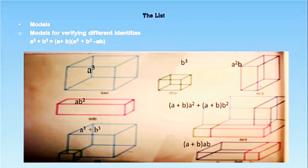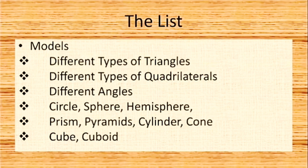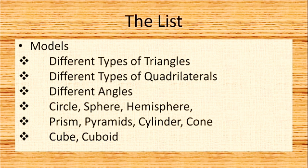Similarly, we can solve the identity a³ + b³. We can have models of different types of triangles, different types of quadrilaterals, models of different angles, circle, sphere, hemisphere, prism, pyramids, cylinder, cone, cube, and cuboid.